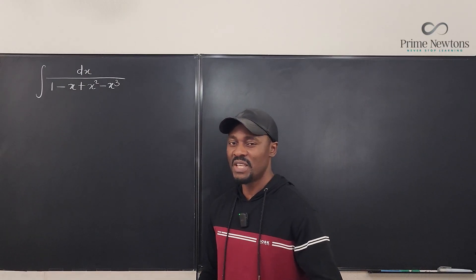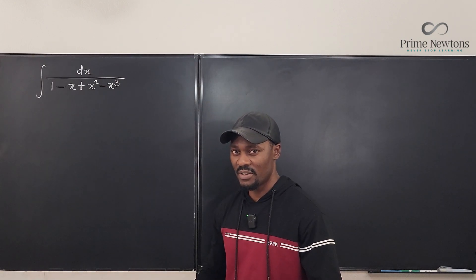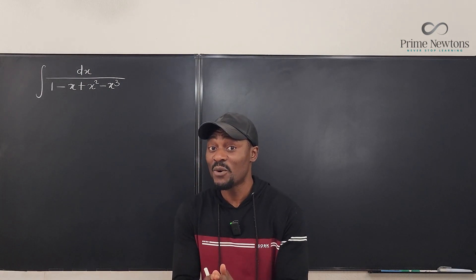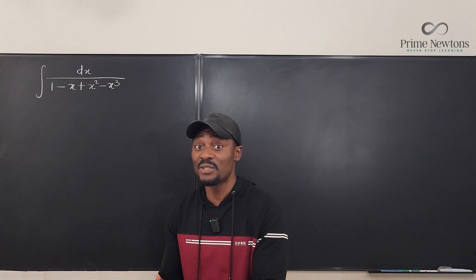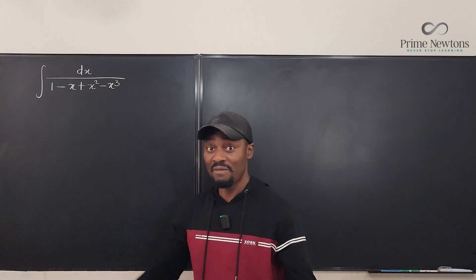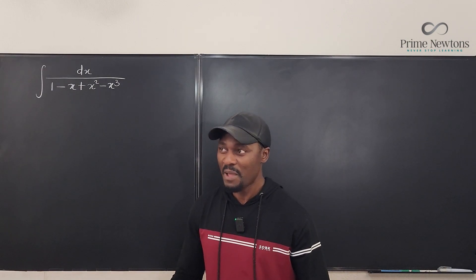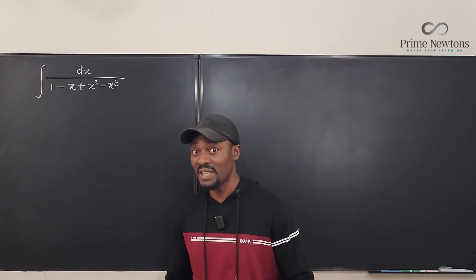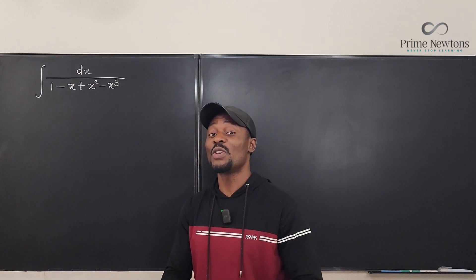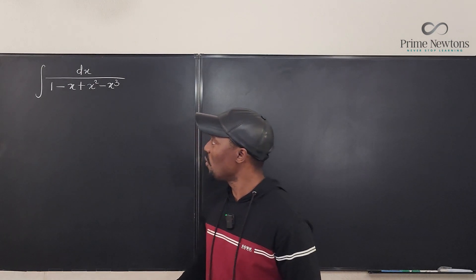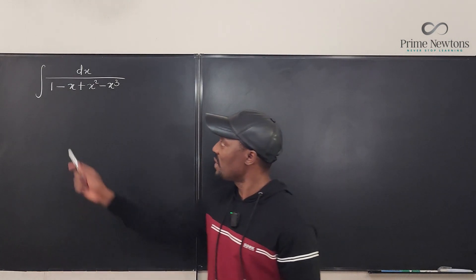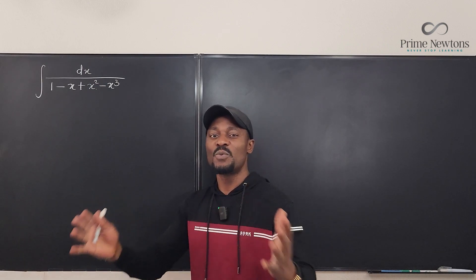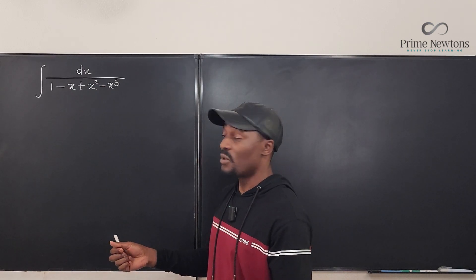Just looking at the problem, you see that we have a polynomial in the denominator. Every time there's a polynomial in the denominator, you pray it is a quadratic, because if it's a quadratic you can complete the square and use trig substitution. But this is not a quadratic — it's a cubic function. With a cubic, you can't complete the square, so you pray you can factor to get at most two terms in the denominator. It looks like we can factor because we have a (1 - x) term, and pulling out x squared should work.